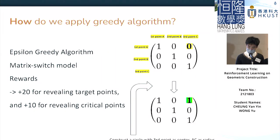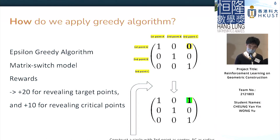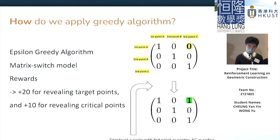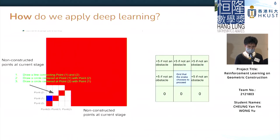For the greedy algorithm, we use a matrix switch model where a matrix represents different constructions. We have two major matrices: the line matrix representing line connections, and the circle matrix. For example, a specific switch represents a circle centered at C using A as a radius. We use an epsilon-greedy algorithm to incentivize exploration of different options at an epsilon percentage, while also choosing the highest-valued option. This is useful, but it's quite unstable and inefficient.